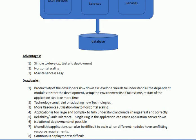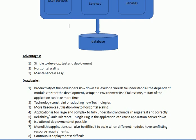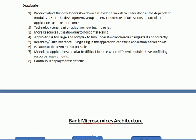Monolithic applications are also difficult to scale when different modules have conflicting resource requirements. For example, if account services is being used heavily by customers and you want to add resources exclusively for account services, it is not possible — you either have to increase or decrease instances for the entire application.